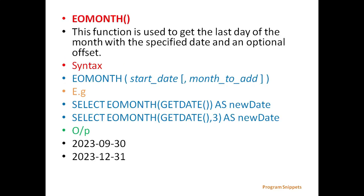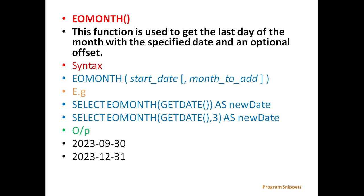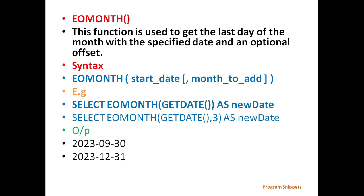Next is EOMonth. This function is used to get the last day of the month with the specified date and an optional offset. The general syntax is EOMonth with parameters startDate and month to add. For example, select EOMonth getDate will get the last date for the current month, and select EOMonth getDate, 3 will display the last date of the month three months from the current date.